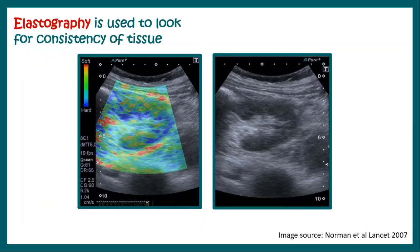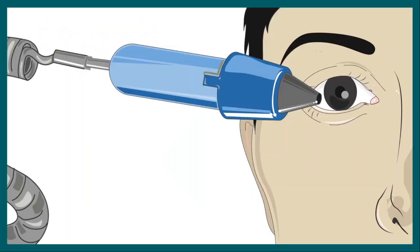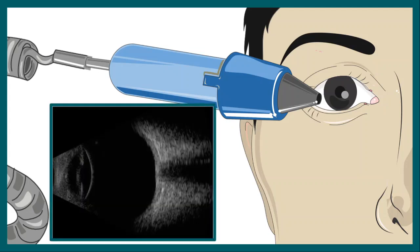Another type of imaging that uses ultrasound is known as elastography, which uses different colors to represent the consistency of a particular tissue, as seen in this image. Ultrasonography can also be used to image the eye and can detect different conditions of the eyeball. This image shows a normal eye USG, and you can make out the normal contour of the eye.